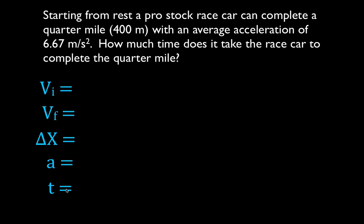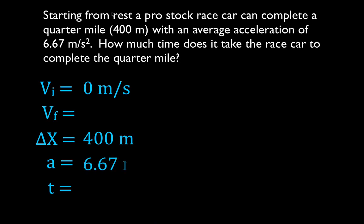Step two is to fill in all five variables with what you know. You should be given three so that you can solve for the fourth. Starting from rest, the initial velocity is zero. Quarter-mile is 400 meters — that's the distance. We're given the acceleration and asked to solve for the time. We're not given the final velocity and not asked for it, so we're going to ignore the final velocity.